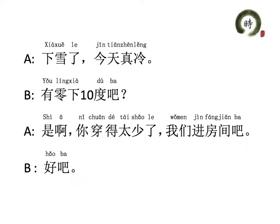下雪了，今天真冷 — it's snowing, it's really cold today. 有零下十度吧 — the temperature may be ten degrees below zero. We put 有 at the beginning and 吧 at the end — this structure expresses a hypothesis. 是啊，你穿得太少了 — yes, you wear too little. 我们进房间吧 — let's go inside the room. 好吧 — OK. We use 吧 to indicate advice, and 好吧 means 'OK, let's do it.'